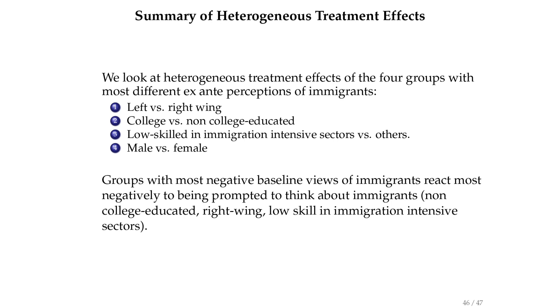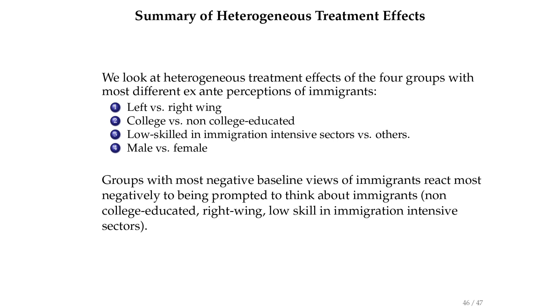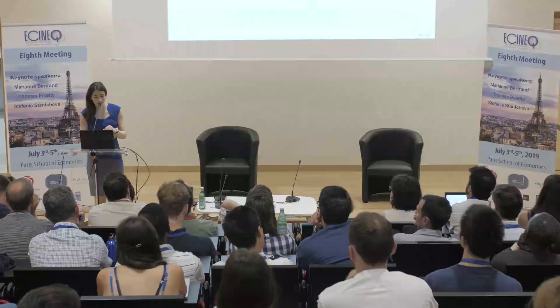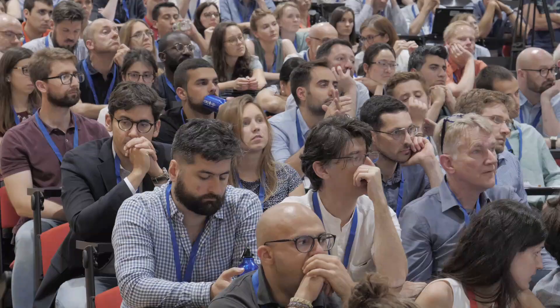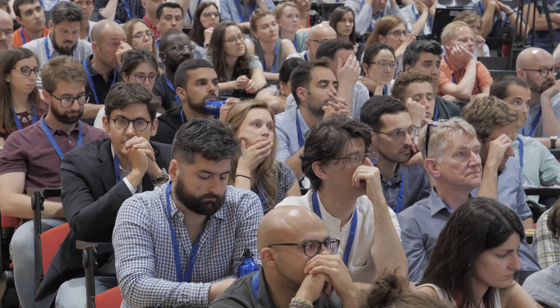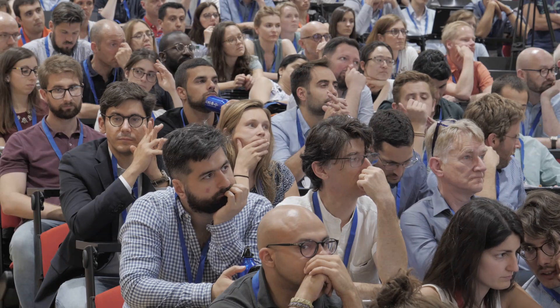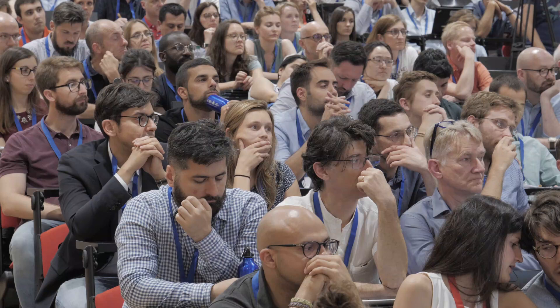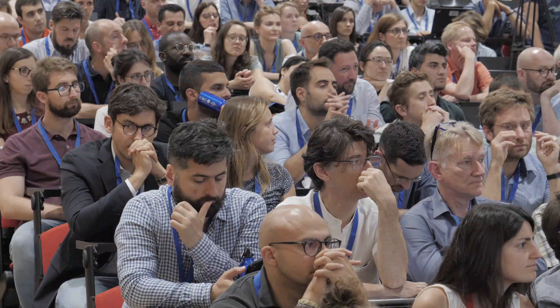We can also look at heterogeneous effects. Cutting by left and right wing, college versus not college educated, low-skilled respondents in immigration-intensive sectors, male versus female — the groups which started with the most negative baseline views are also the ones which react more to being primed to think about immigrants first. Which makes sense — they have the most negative views, they're made to think about immigrants, and they reduce their support for redistribution more.